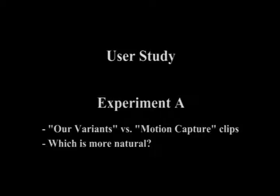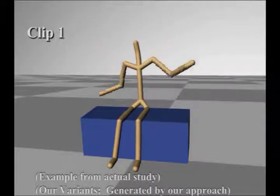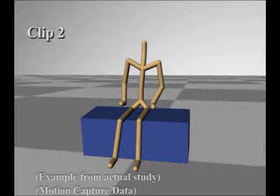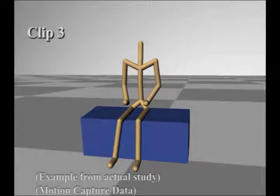For experiment A, the users watch a mixture of our variants and motion capture clips. For each clip, we ask the users to provide a numeric score from 1 to 9 of how natural they think the human motion is.